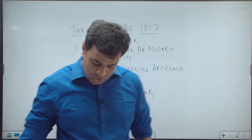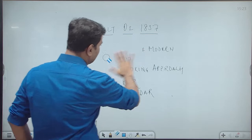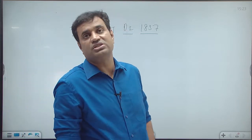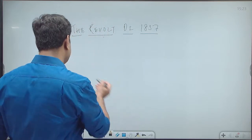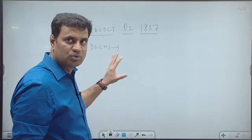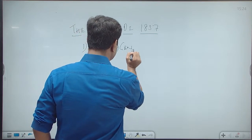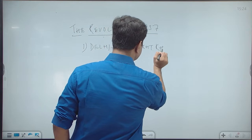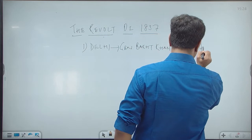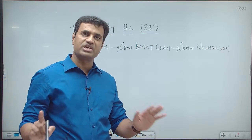The revolt came to an end at different centers, suppressed by different British officers. At Delhi, the real person who fought against the British was General Bakht Khan, who fought on behalf of Bahadur Shah Zafar. The revolt at Delhi was suppressed by British officer John Nicolson. At Kanpur, the revolt was formally led by Nana Sahib but the actual fighting was under Maratha military general Tantya Tope. The revolt at Kanpur was suppressed by Sir Colin Campbell.